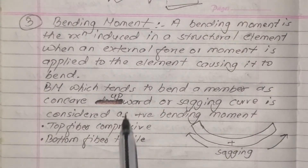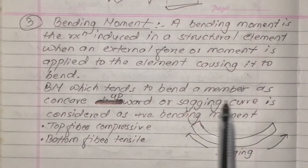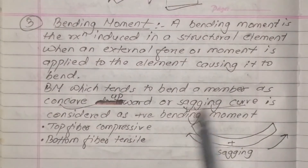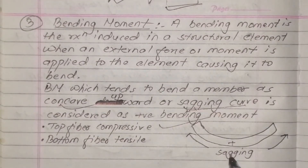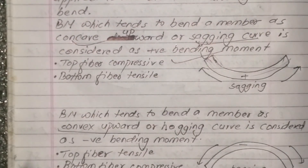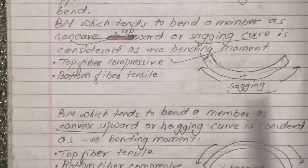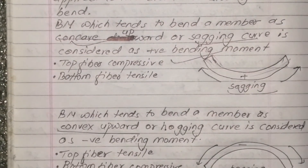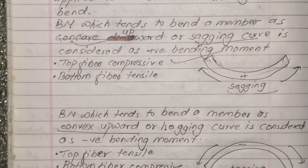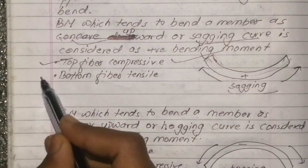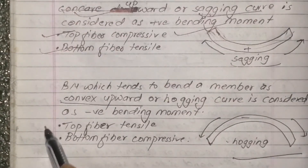A bending moment which tends to bend a member concave upward, also called sagging, is a positive bending moment. A bending moment which tends to bend a member convex upward is considered a negative bending moment. For positive bending moment, the top fiber is in compression and the bottom fiber is in tension.